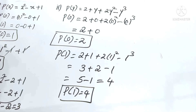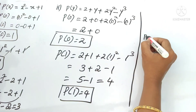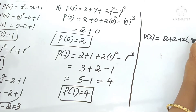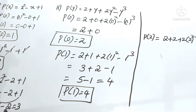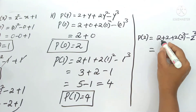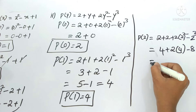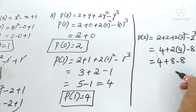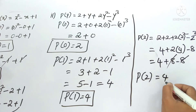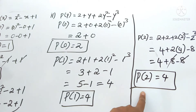Next, p of 2: p of 2 equals 2 plus 2 plus 2 into 2 square minus 2 cube. That gives 2 plus 2 is 4, plus 2 into 4 is 8, minus 2 cube which is 8. So plus 8 and minus 8 will get cancelled. So p of 2 is also 4. Summary: p of 0 is 2, p of 1 is 4, p of 2 is also 4.